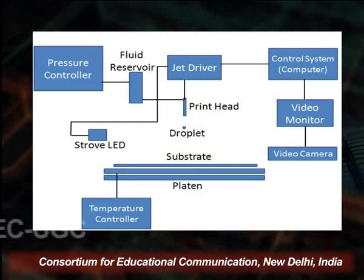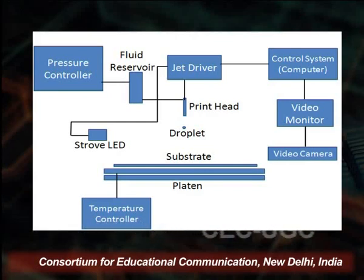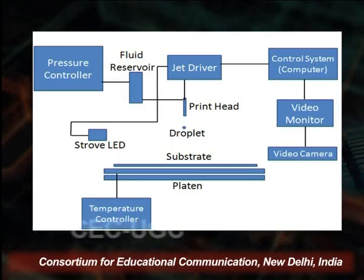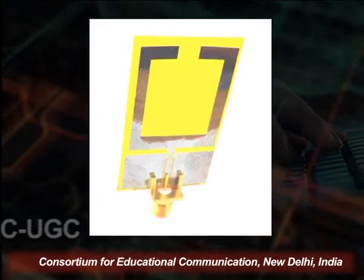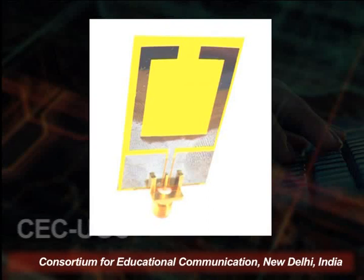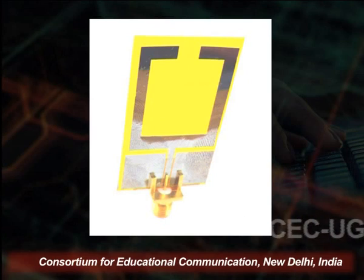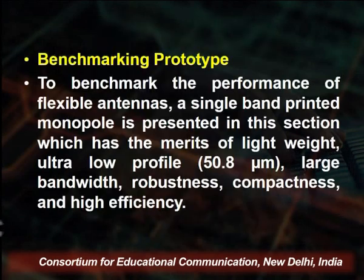When the pattern goes to the jet driver, the jet driver uses the nozzle to drop the ink and print on the substrate. This works in a constrained and controlled manner. This is one type of inkjet printing design shown on the screen.